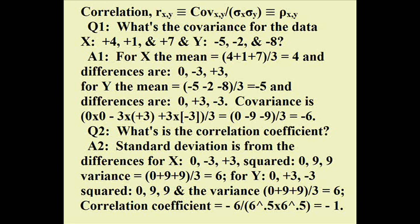Now we need the correlation coefficient. We square the differences for each group: 0, 9, 9 for both x and y. Add them and divide by 3 to get a variance of 6 for both. The standard deviations are both √6. Divide the covariance of −6 by √6 × √6 = 6, giving us −6/6 = −1. They are perfectly negatively correlated.